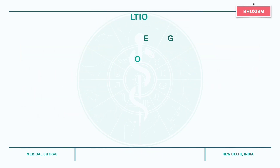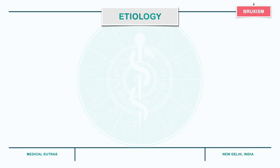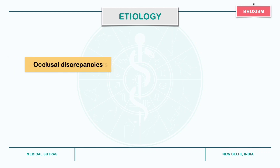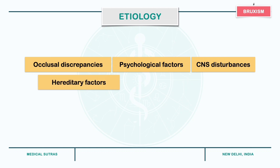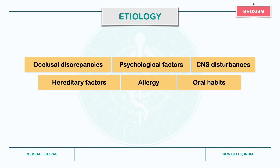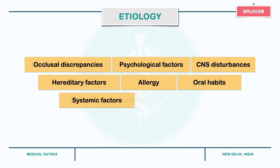The factors that can lead to bruxism include occlusal discrepancies, psychological factors, CNS disturbances, hereditary factors, allergy, oral habits, systemic factors and occupational factors.